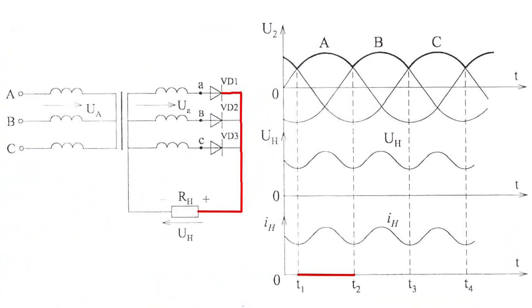VD1 diode switches on within the interval T1 to T2. Phase A powers the load resistance.